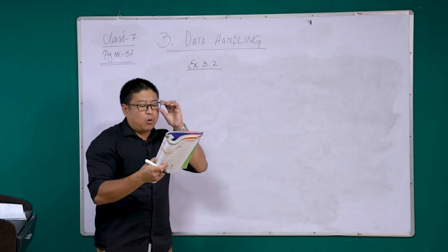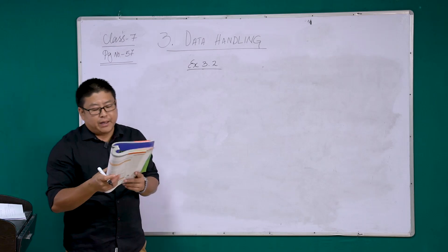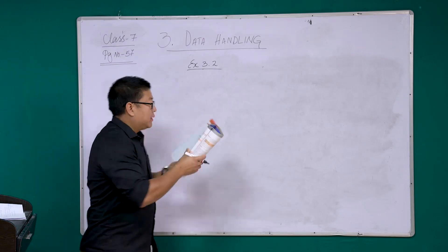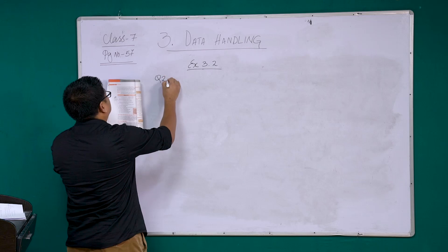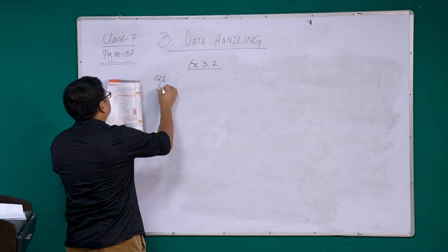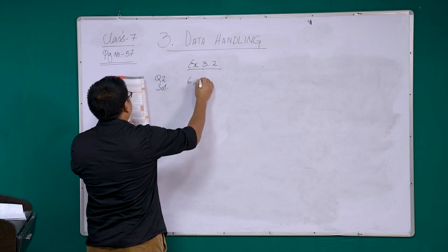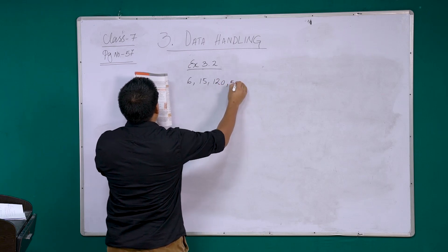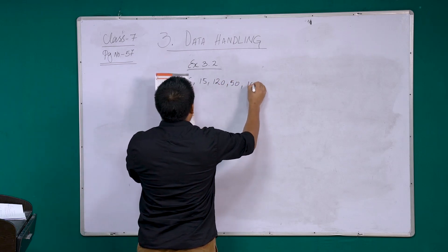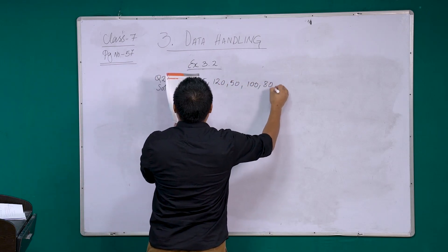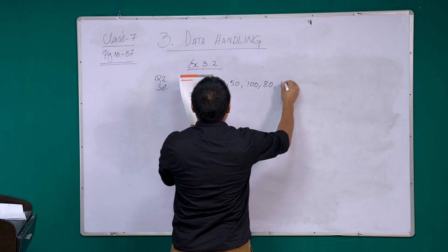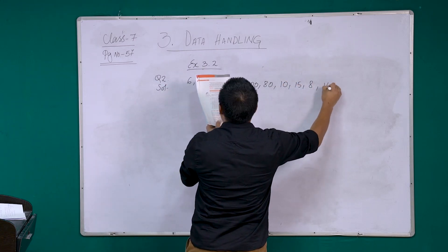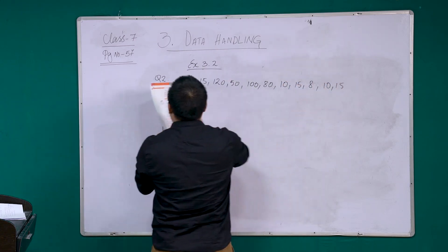The runs scored in a cricket match by 11 players are as follows. The data is: 6, 15, 120, 50, 100, 80, 10, 15, 8, 10, 15.